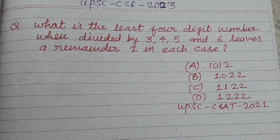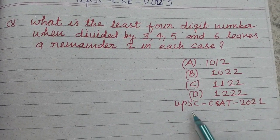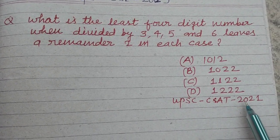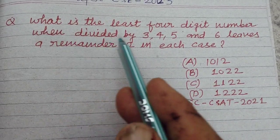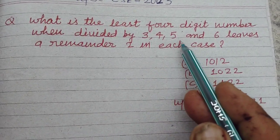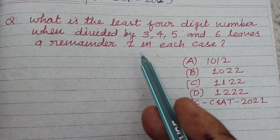Hello viewers, welcome to this YouTube channel. Question from UPSC CSAT 2021: What is the least four-digit number when divided by 3, 4, 5, and 6 leaves a remainder of 2 in each case?